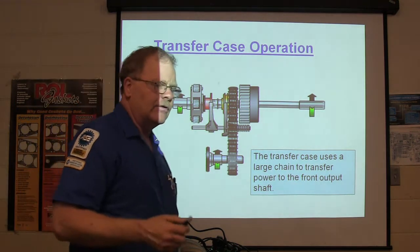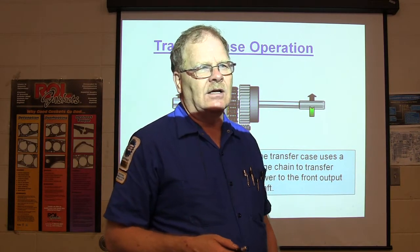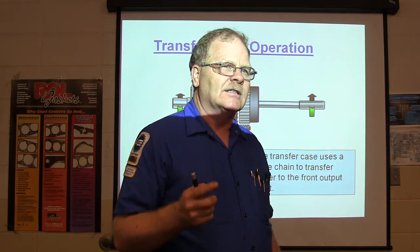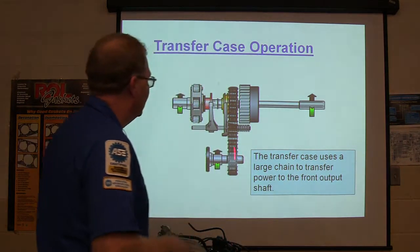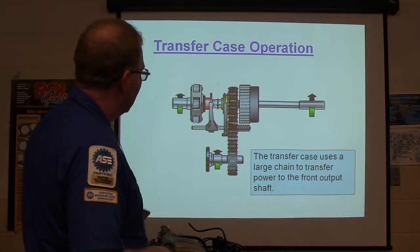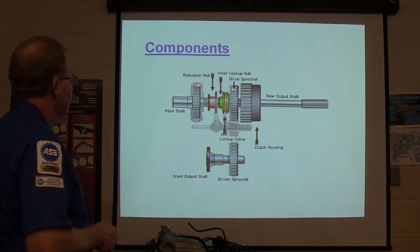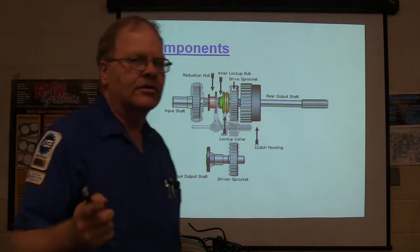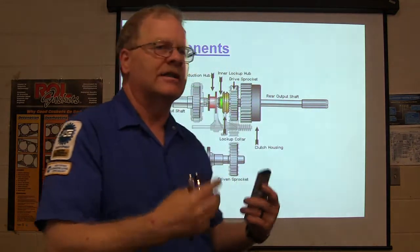A lot of your front-wheel drive transmissions on GM cars — like the 4T60E — have a big chain like that too. Not every front-wheel drive transmission has a chain; some just use gears. This particular design we're looking at uses a chain. You've got your reduction hub, inner lock-up hub, drive sprocket, and lock-up collar. This will be clearer to you when you tear the transfer case down — you'll see this stuff and understand what you're looking at.